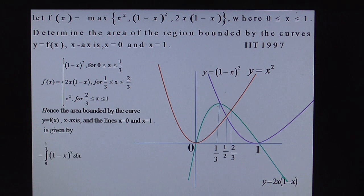Yes the first part 0 to 1 by 3, 1 minus x whole square dx plus, where the graph is maximum in that particular interval you have to take that value only. Plus 1 by 3 to 2 by 3, 2x of 1 minus x dx plus. Now solve this. Finally you get answer as 17 by 27 square units.